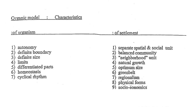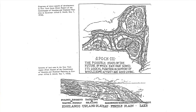At the top of the first page of the handout, it tries to set out some of the characteristics of an organic system and then argues for depicting these protocols in the form of settlement. The diagram below is from the Regional Plan of New York, 1923, which says 'the possible state of the future in which each part serves its logical function in support of health, activity, and good living.' And a version of Patrick Geddes' valley section is below that.